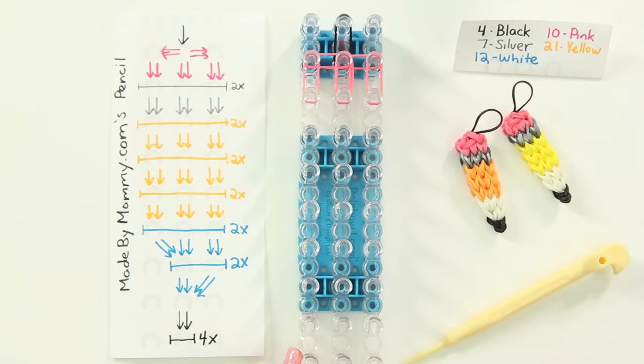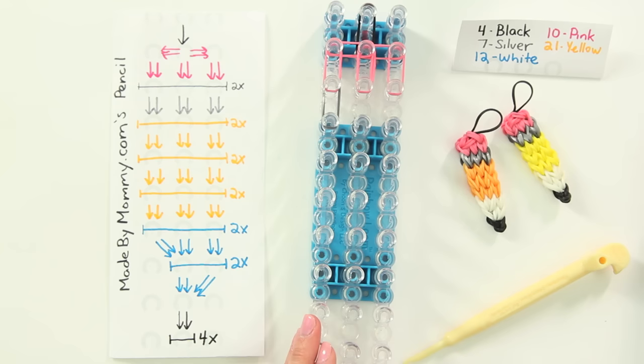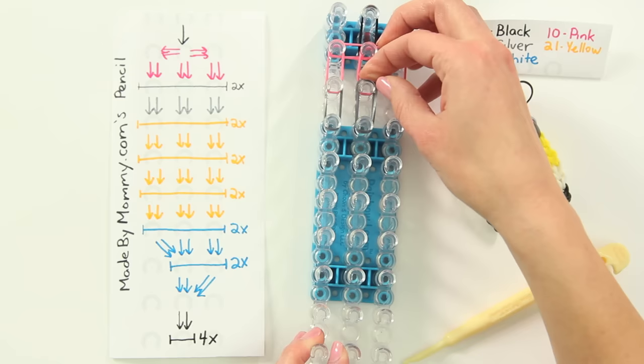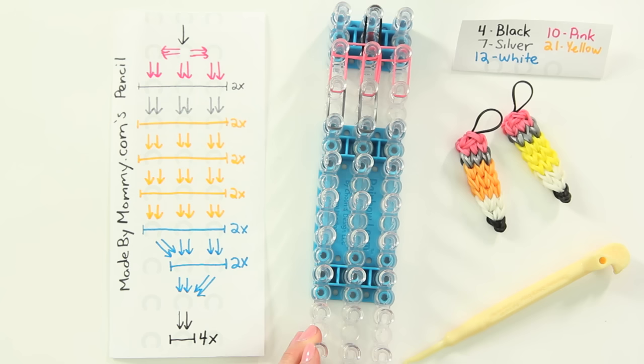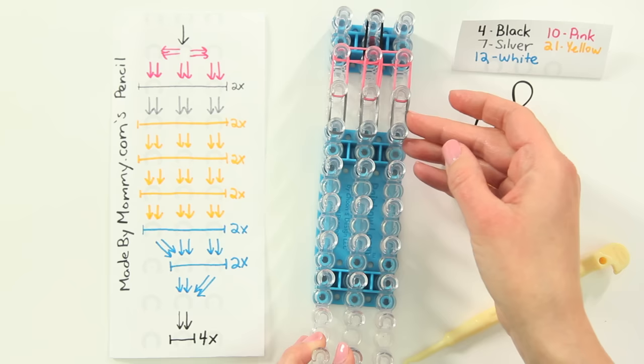Now, we're going to add on the silver band. Two at a time. On the left, middle, and right sides.